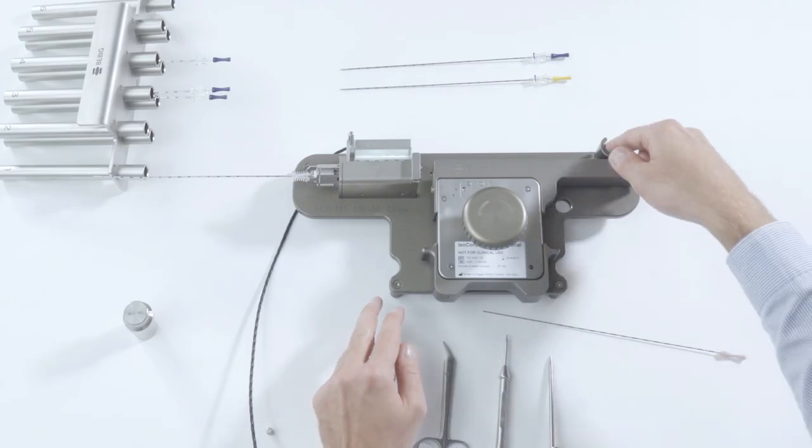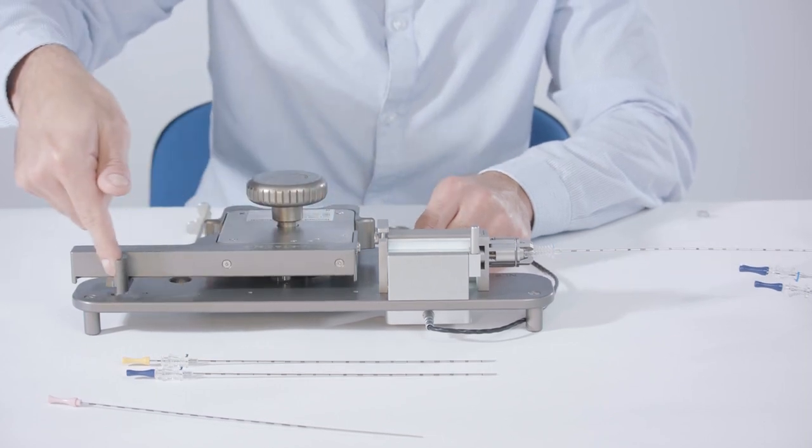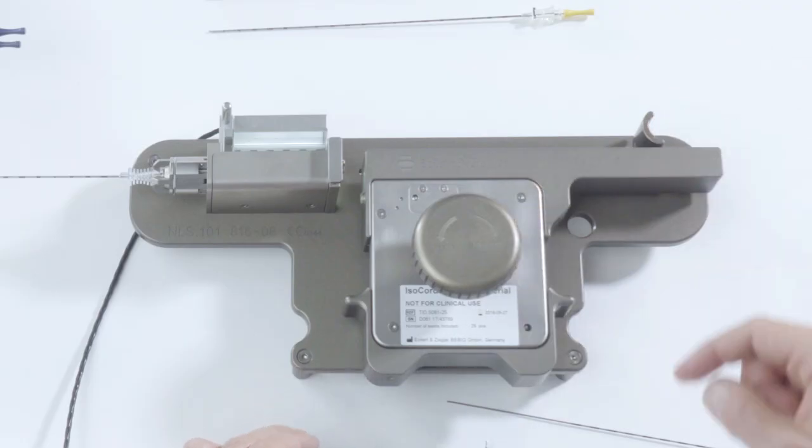Push the stylet by its handle as far as it will go and then return it to its original position in order to load the attached implantation needle with the cut section of the chain.